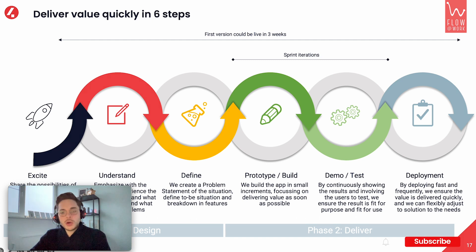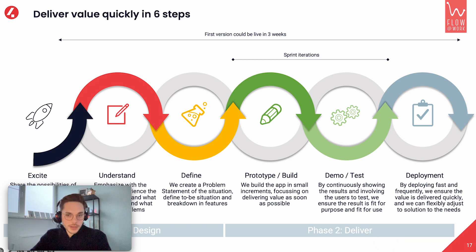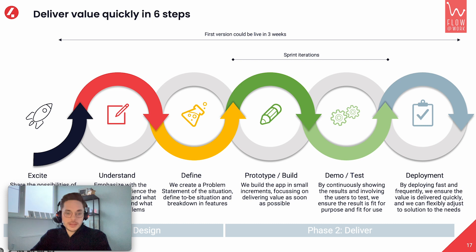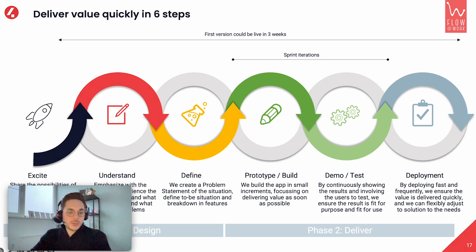Then we go into the deliver phase, where we build a prototype — a minimal viable product. We demo it frequently to the customer, have it tested, and also deployed in iterative ways. And that way, we quite quickly come to the development of a minimal viable product which is workable and can be deployed to production.